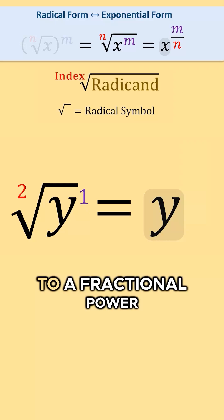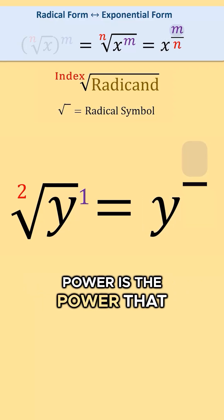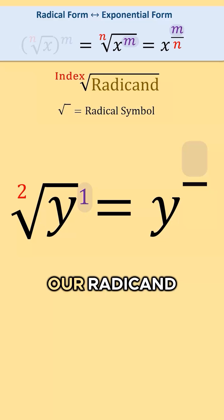Y will be raised to a fractional power. The numerator of this fractional power is the power that everything is raised to within our radicand. In this case it will be 1.